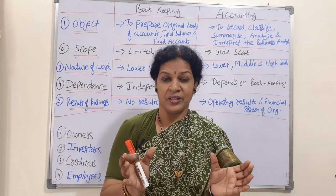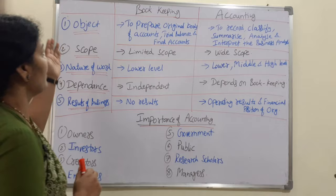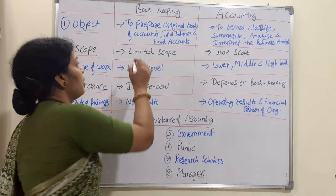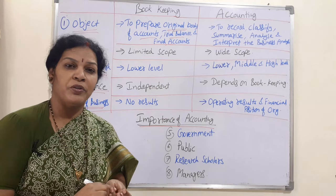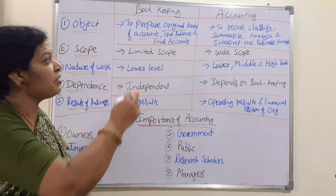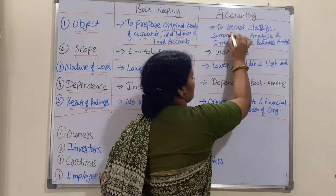Now let's see the difference between bookkeeping and accounting. The first difference is the object. The object of bookkeeping is to prepare the original books of accounts — journal entries and ledgers — then prepare the trial balance and final accounts. That is the main object of bookkeeping.